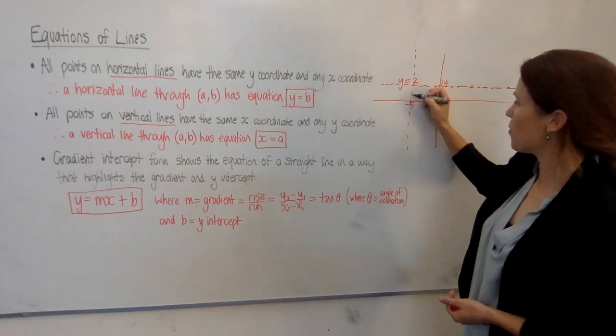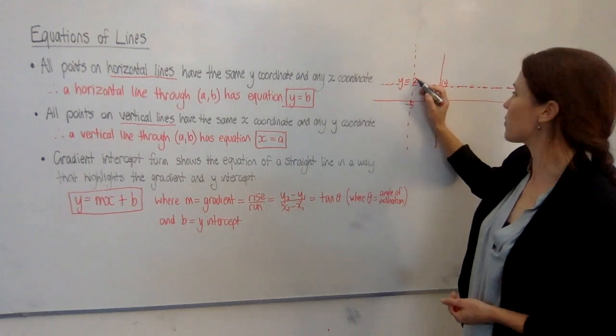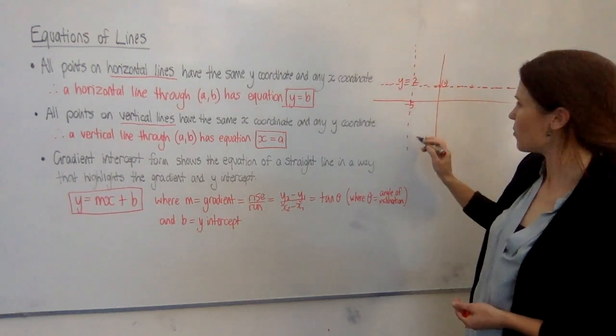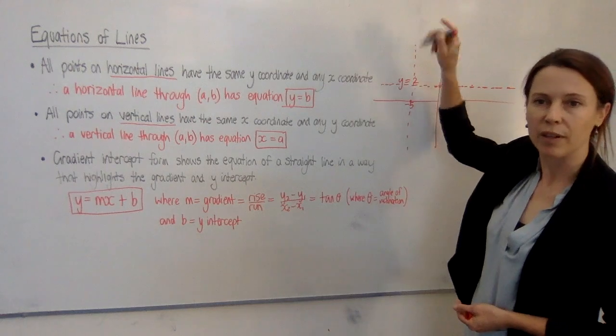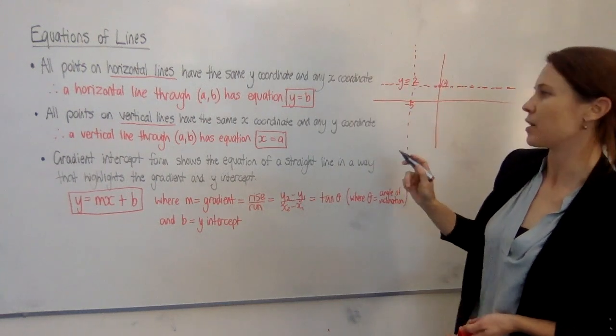then we've got (-5,0), (-5,1), (-5,2), (-5,3), and all the fractions and decimals in between going onwards forever to infinity and minus infinity in both directions.